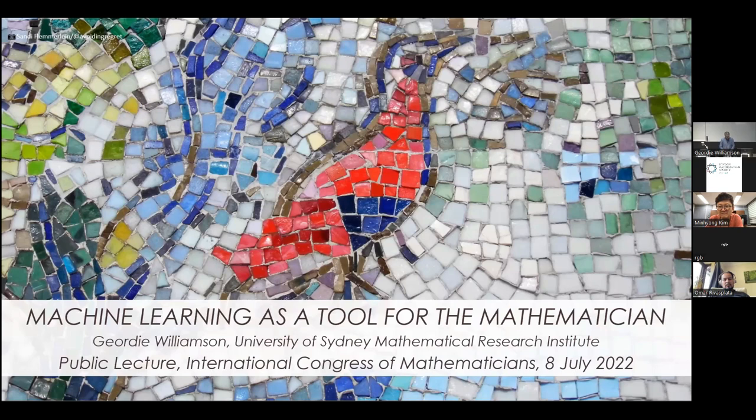So over the last two years, I've been working with DeepMind, which is an AI lab based in London, on applications of machine learning to mathematics. And I'm really fascinated by this work. Not only does it show new possibilities in mathematics, but it also casts a very interesting light on the mathematical process. And that's what I'm going to try to communicate today in this public lecture.